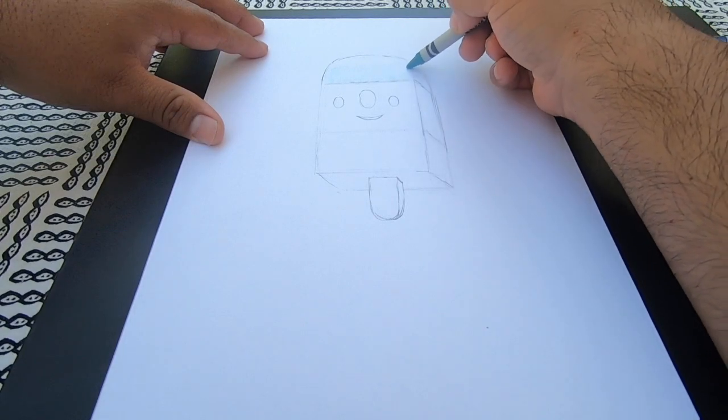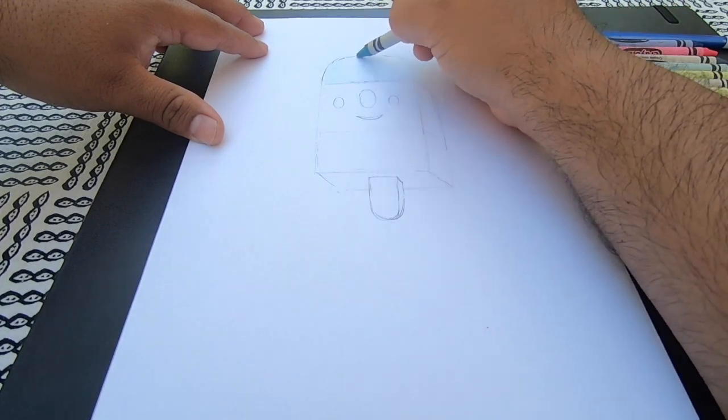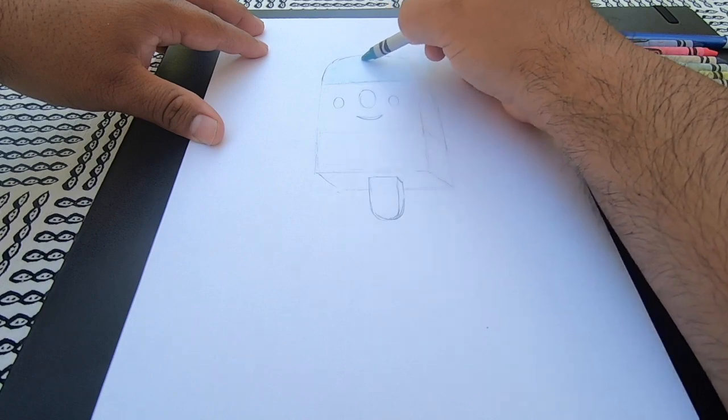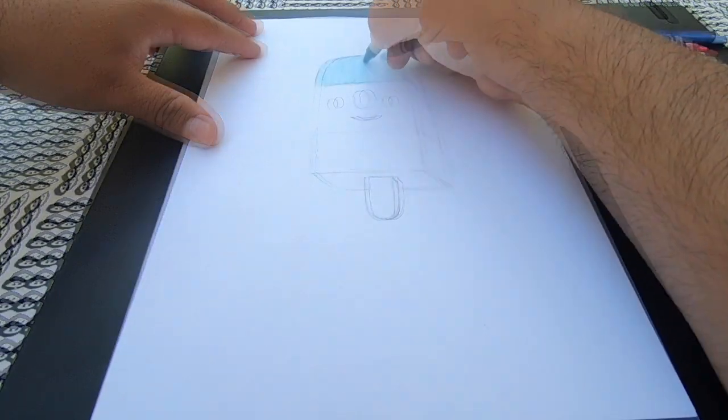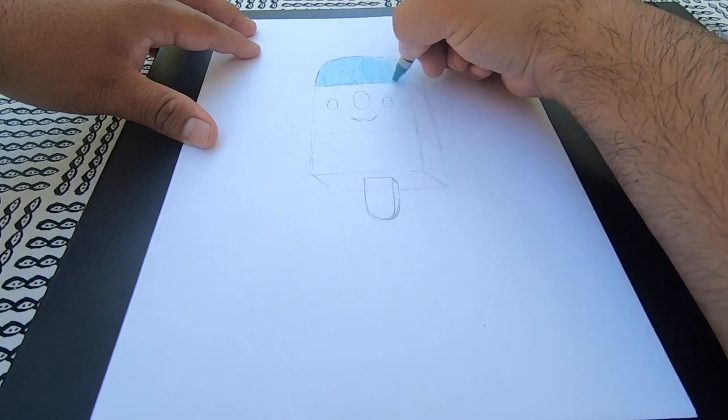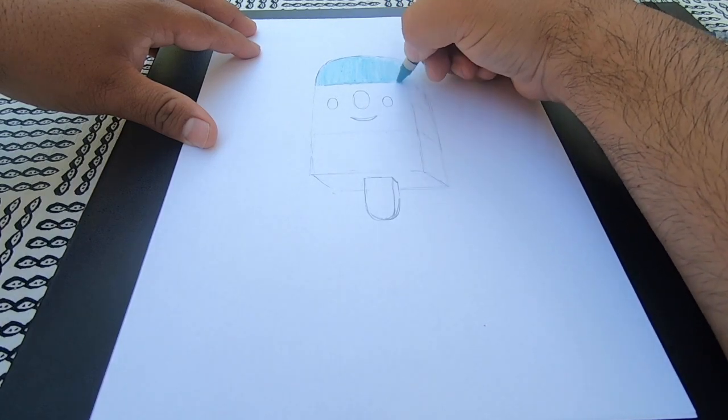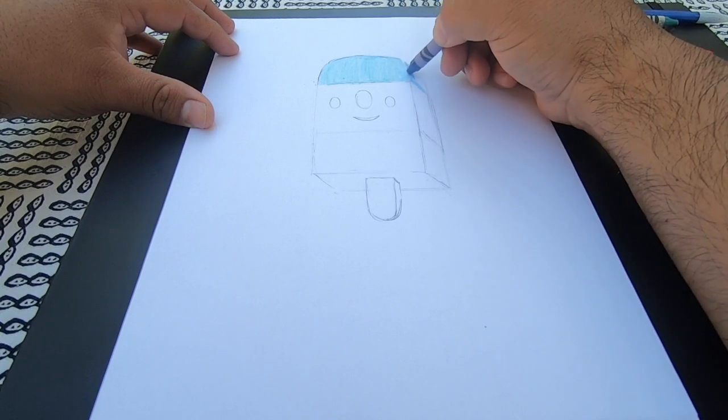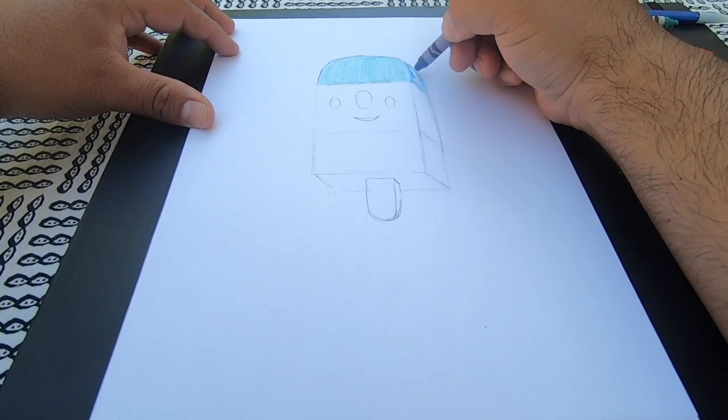At this point I'm gonna start to add color with my crayons. I divided the popsicle or the paleta into three sections. I'm gonna use a light color for the left side of the paleta and then I'm gonna use a darker color for the right side of the paleta to give it an illusion of light and shadow.